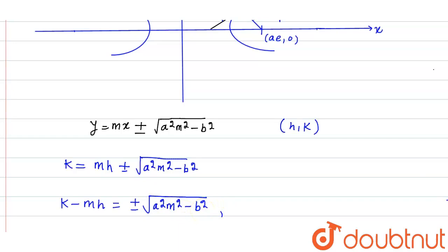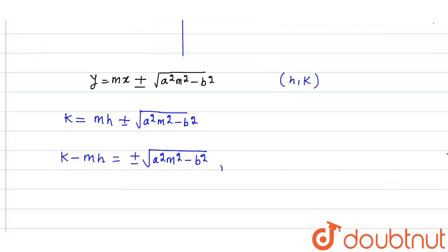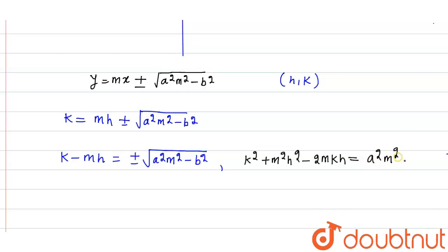Squaring both sides: k² + m²h² - 2mkh = a²m² - b².